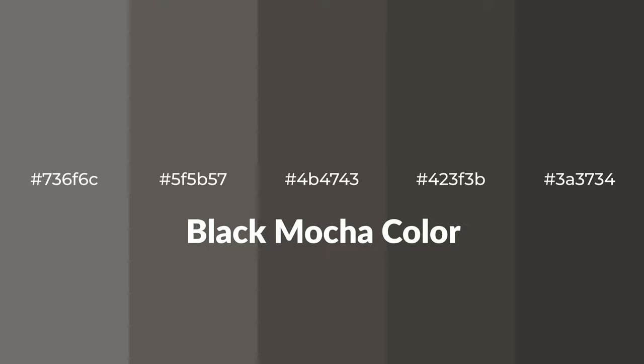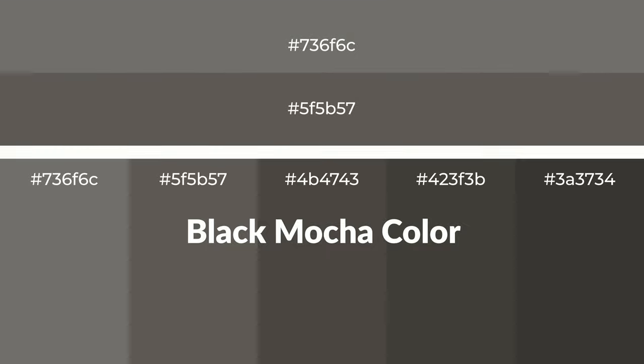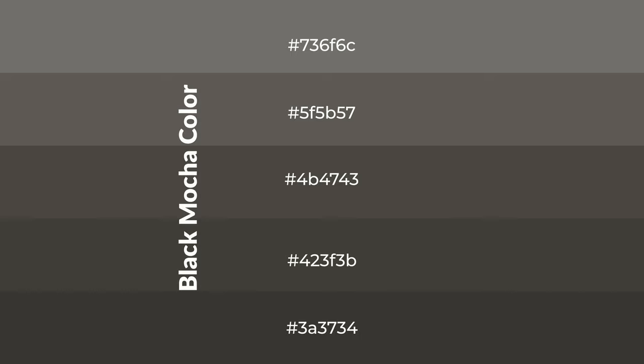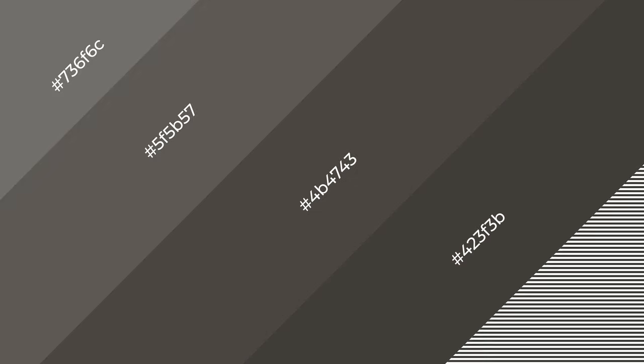Warm shades of black mocha color with gray hue for your next project. To generate tints of a color, we add white to the color. Tints create light and exquisite emotions. To generate shades of a color, we add black to the color, and it is used in patterns, 3D effects, and layers. Shades create depth and drama.